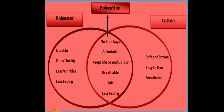Here is a chart comparing three fabrics: polyester, cotton, and poly-cotton. Polyester is a synthetic fabric; cotton is a natural fabric; and poly-cotton is a blended fabric. Polyester is durable, dries quickly, has less wrinkling and less fading. Cotton is soft, strong, easy to dye, and breathable. Poly-cotton is affordable, has no shrinkage, keeps its shape and color, and is breathable, soft, and less prone to fading.